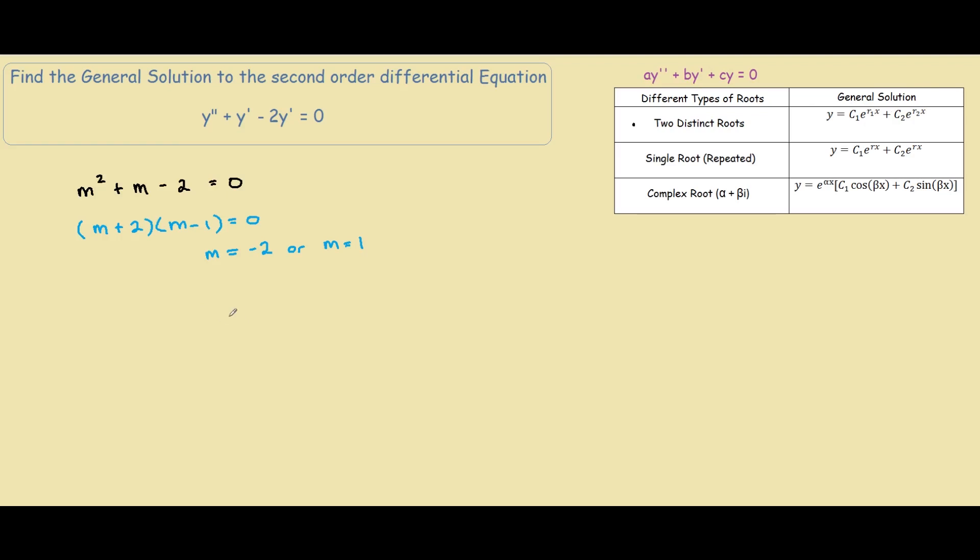which tells us that y would equal to some constant, c1, e to our first root, so negative 2, x, plus another constant, c2, e to the 1x which is just x.